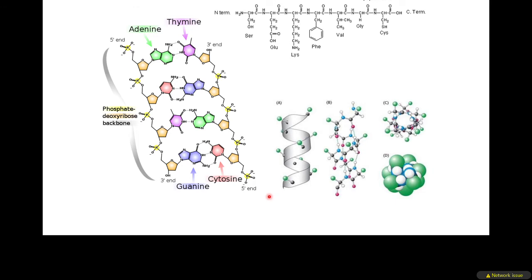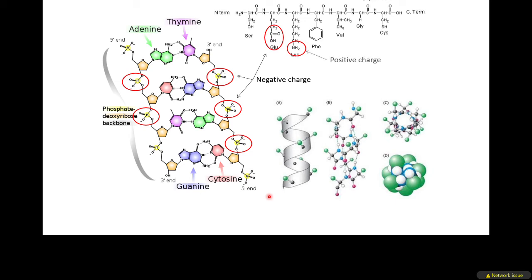DNA has negatively charged phosphate groups on the backbone and at most pHs these are always negative, so DNA electrophoresis is relatively simple — things move towards the positive electrode. In proteins, many groups can become either positively or negatively charged: carboxylic acid side chains can be negative or neutral, primary or secondary amines can be positive or neutral, and histidine can be positive at certain pHs.